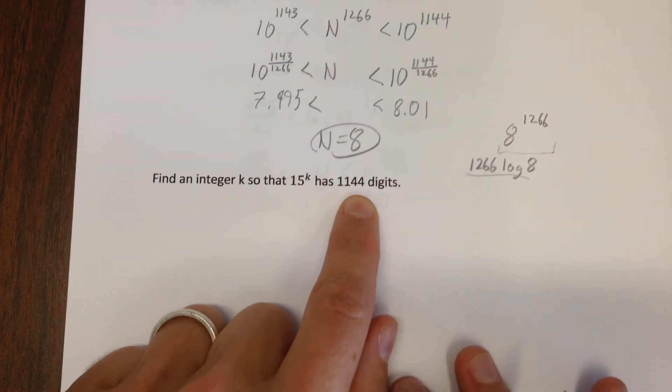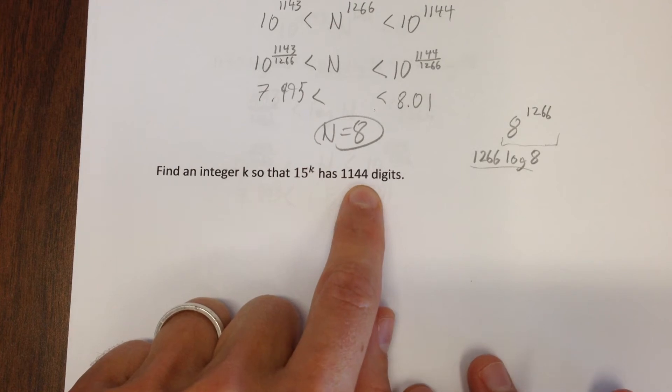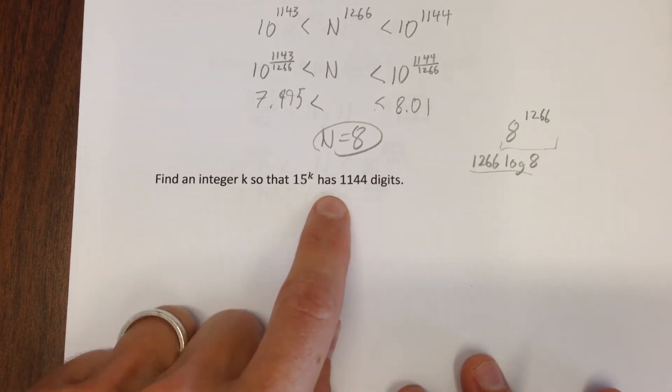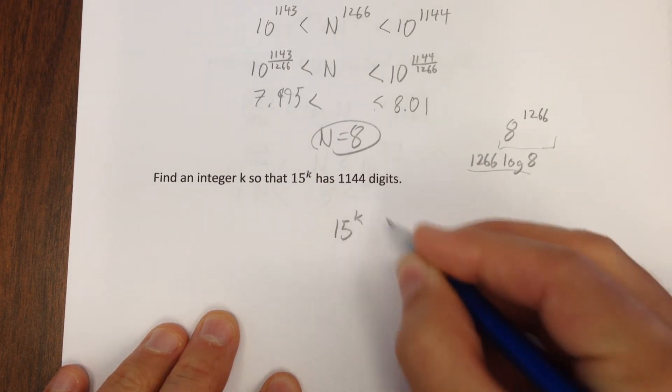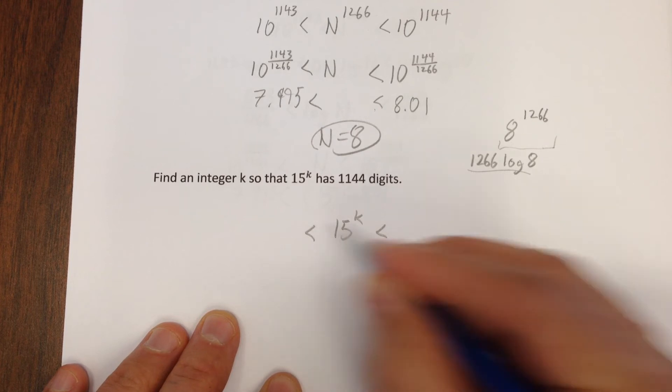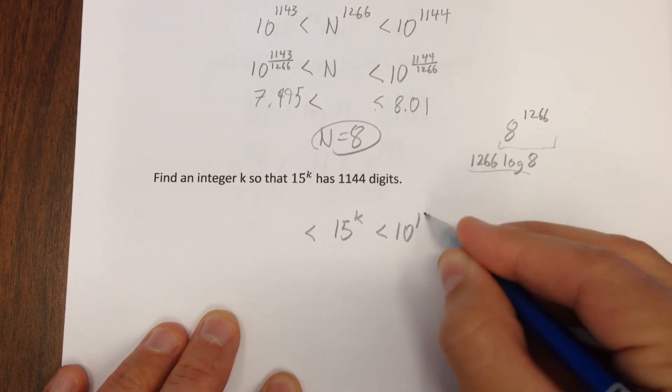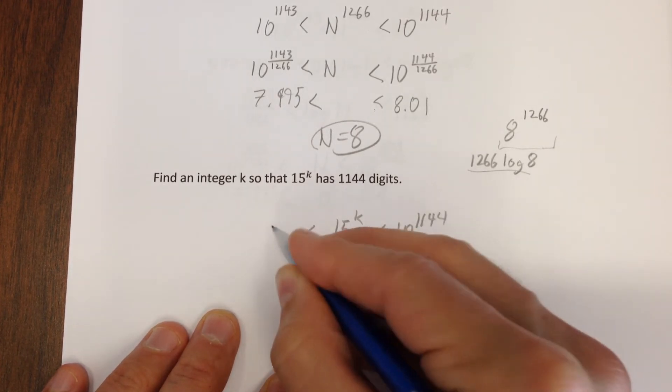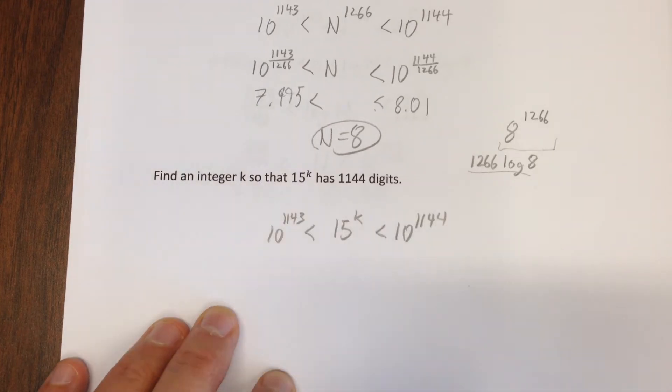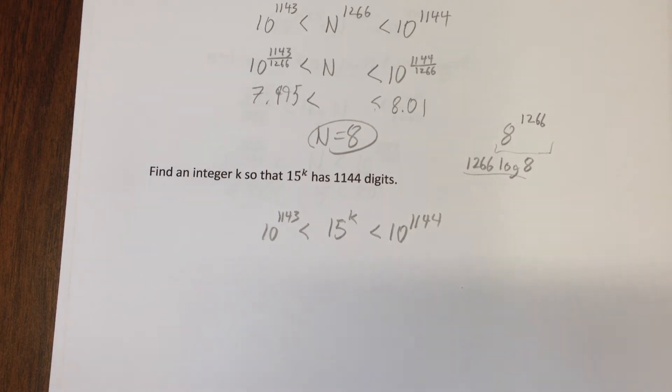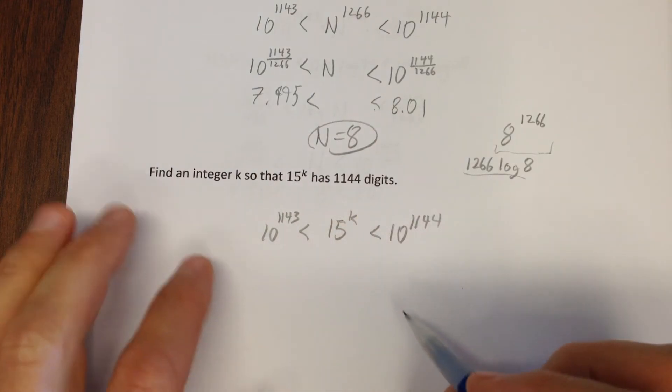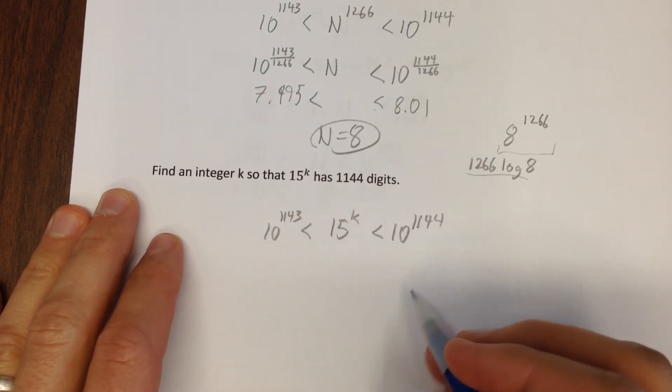We're gonna have to do something similar to that with this problem, now I've got my power here, so now I need 15 to the k somehow to be between 10 to the 1144 and 10 to the 1143, okay? So now I've got my variable in the exponent, well that's challenging because of course I can't just take a root to get rid of the power like the last problem, so I'll take the logarithm of all these.